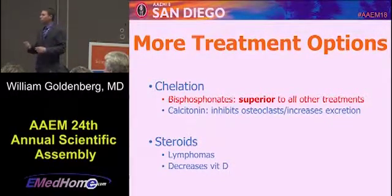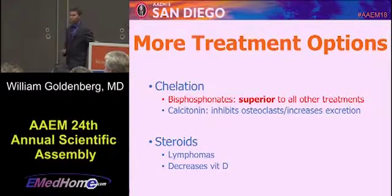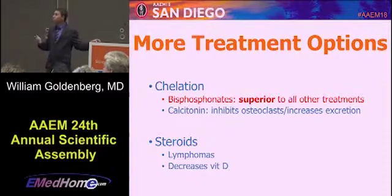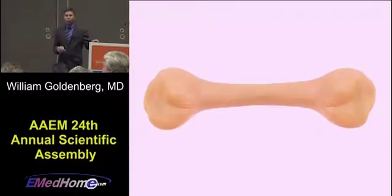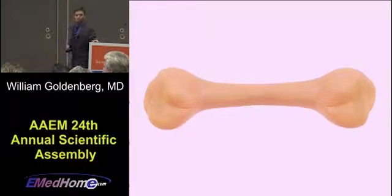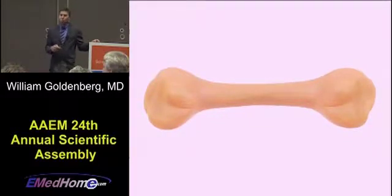If your patient has a lymphoma, you should consider giving steroids, as it will decrease the activity of the vitamin D. You should give bisphosphonates in your emergency department — you need to realize that they take three to four days to become active and fully work, so help your patient out by starting them early.